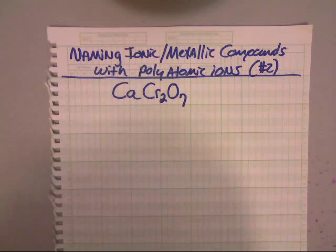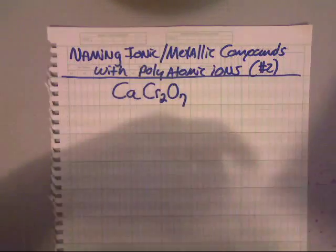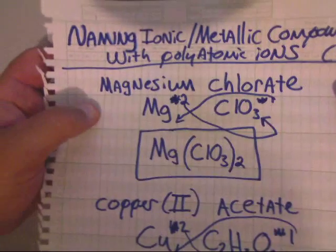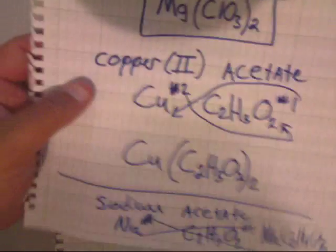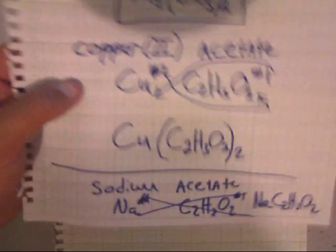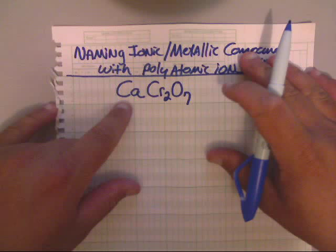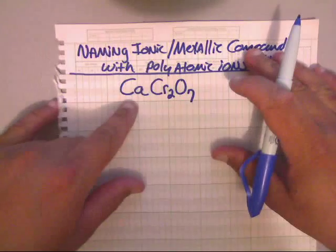Welcome back to our second video of naming ionic and metallic compounds with polyatomic ions. In the first video, I showed you how to take a name and write the formula. We did that for magnesium chlorate, copper-2-acetate, and sodium acetate. Now in this video, we're going to start with the formula and get the name.